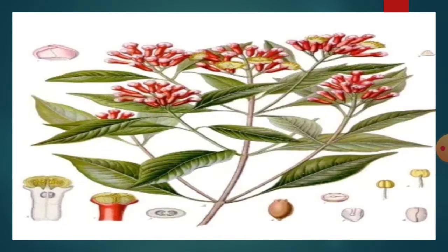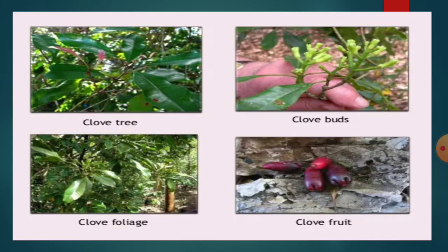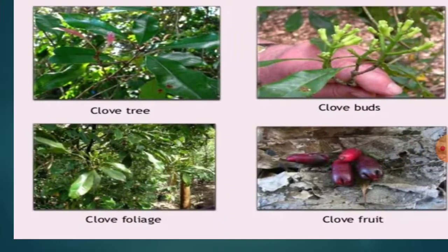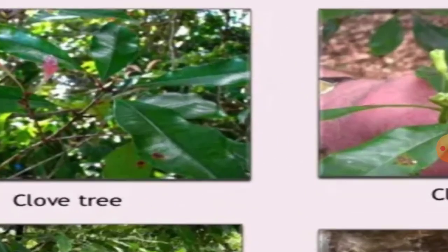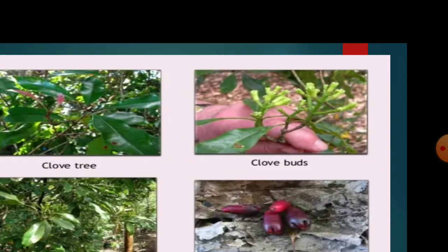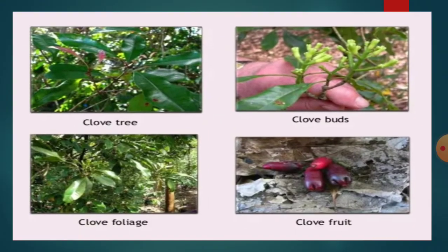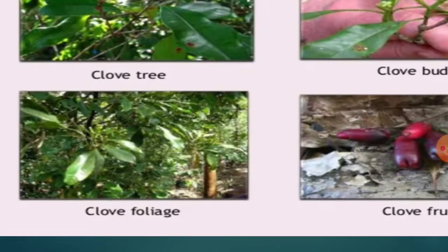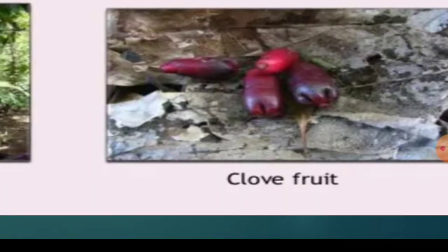In the diagram of the plant, there are lots of buds in the tree. You can see the clove tree on screen — these are the clove buds, the clove foliage, and these are the clove fruits.